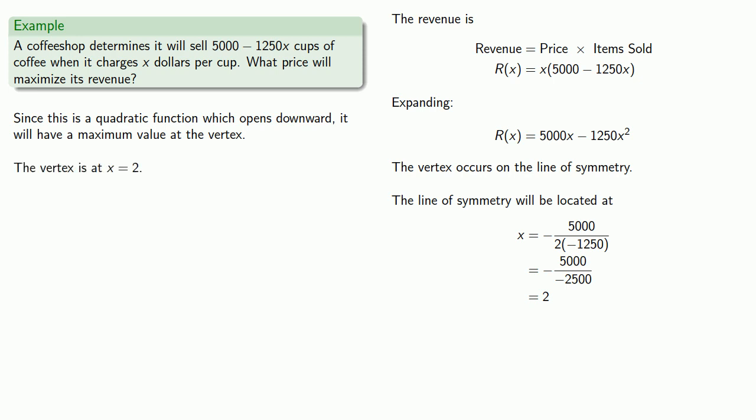Now ordinarily we might want to find the y-coordinate as well, but in this particular case, we're looking for the price and x is the price. So we might simply say the maximum revenue will occur when the price per cup is $2.